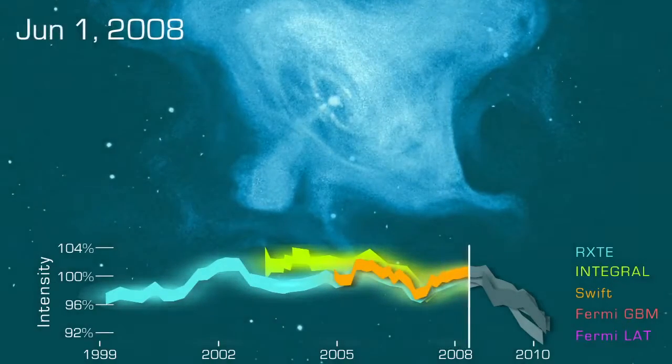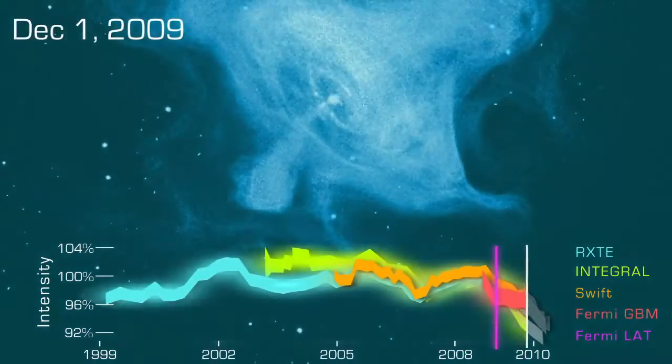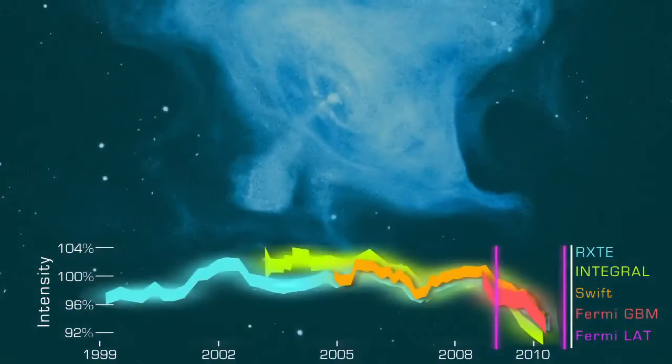Once regarded as an unchanging standard, the Crab Nebula flickers from energy ultimately provided by a long-dead star.